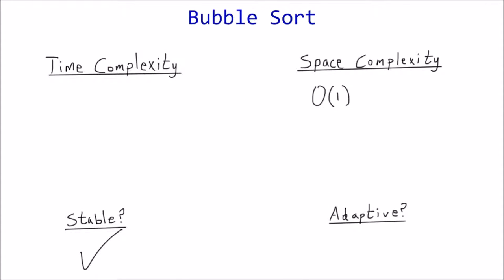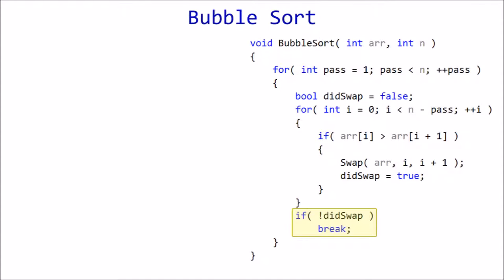A sorting algorithm is adaptive if it can take advantage of the initial order, improving performance the more the list is already sorted. Bubble sort is an adaptive algorithm because of the early exit condition. If no swaps took place during the previous pass, the list is obviously sorted, so it finishes early.